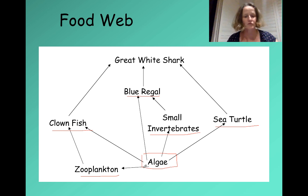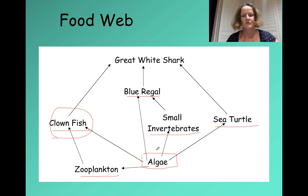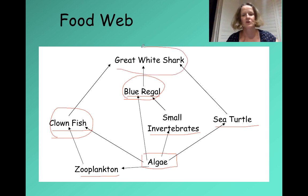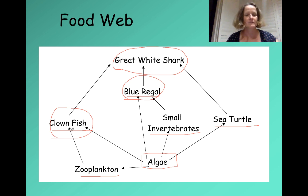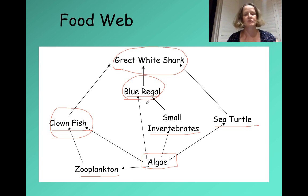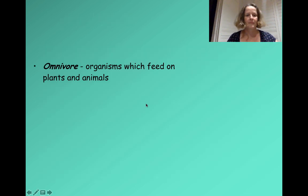We also have carnivores. Zooplankton animals are eaten by the clownfish. The small invertebrates are eaten by the blue regal. The sea turtle is eaten by the great white shark. In fact, the great white shark eats blue regals and clownfish too. Some organisms, like the clownfish and the blue regal, carry out two roles — they are herbivores and carnivores — and they're given the special name omnivore: organisms feeding on both plants and animals.